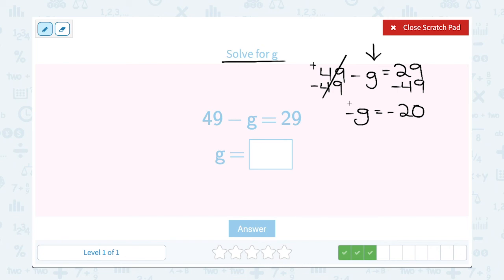G is not by itself because of that minus sign. Remember, minus or negative G is the same as negative 1G. So from here, I'm going to divide by negative 1 on both sides of the equal sign. Multiply and divide by a negative cancel out and leave me G. Negative 20 divided by negative 1 is positive 20. A negative divided by a negative gives me a positive number. So G must be equal to 20.